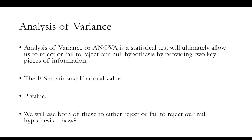So what is analysis of variance, or ANOVA? It's a statistical test which will ultimately allow us to reject or fail to reject our null hypotheses by providing two key pieces of information: the F statistic and F critical value, and the p-value — the probability value. We're going to use both of these pieces of information from the ANOVA to either reject or fail to reject our null hypotheses.